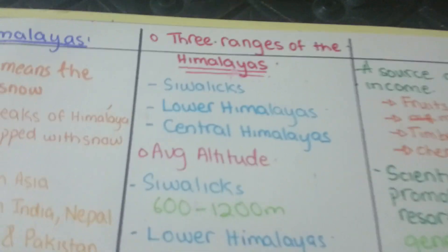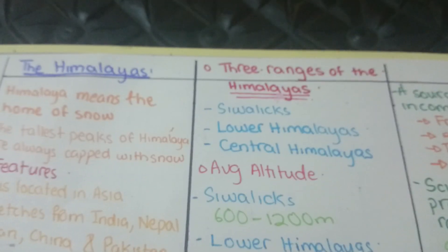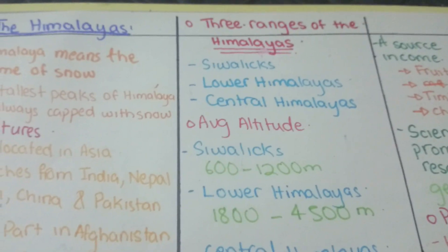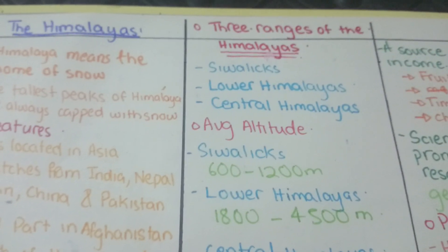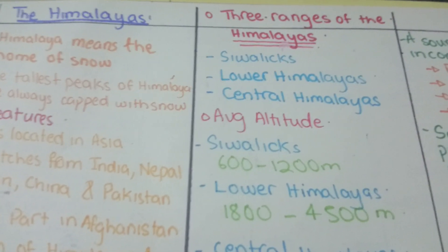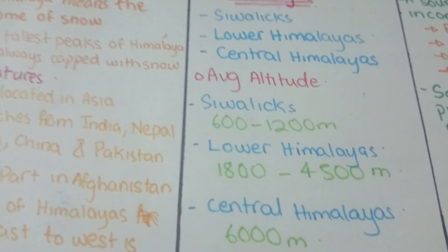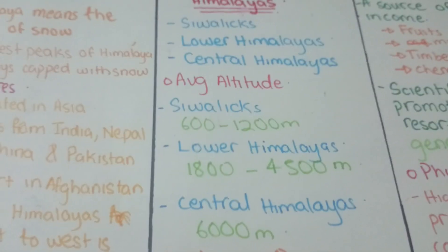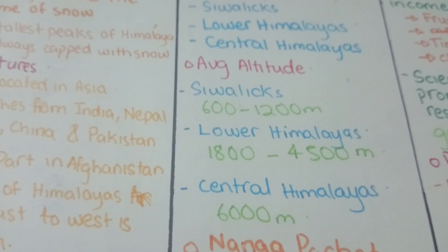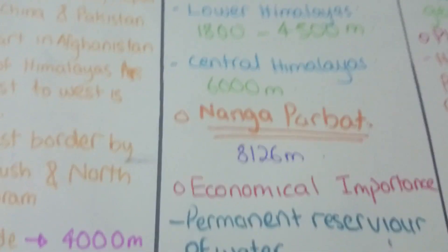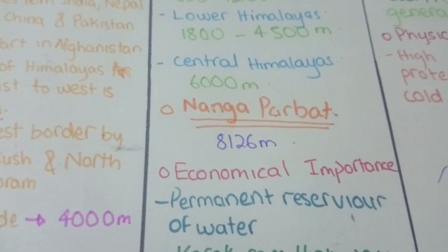The Himalayas are divided into three ranges: Siwaliks, Lower Himalayas, and Central Himalayas. The Siwaliks consist of Margalla Hills, Kalachitta Pahars, and other hills. Average altitude of Siwaliks is 600 to 1,200 meters; Lower Himalayas have 1,800 to 4,500 meters; Central Himalayas have 6,000 meters. Nanga Parbat, at 8,126 meters, is also part of the Himalayas.